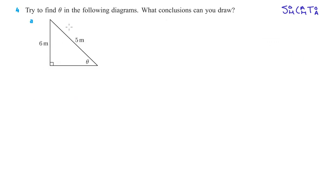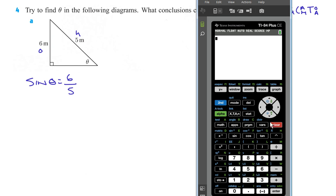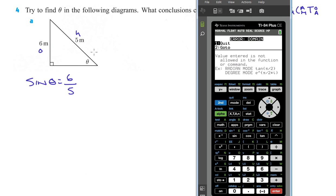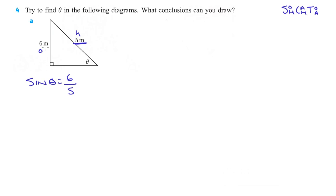Moving on to number four: try to find theta in the following diagrams — what conclusion can you draw? This is the opposite side and this is the hypotenuse, so this would be sine. Sine theta equals opposite, which is 6, over hypotenuse, which is 5. If we do second sine of 6 divided by 5 in our calculator — error. You cannot do that because the hypotenuse always has to be the longest side, and 5 is not longer than 6. This triangle is not possible — that's our conclusion.